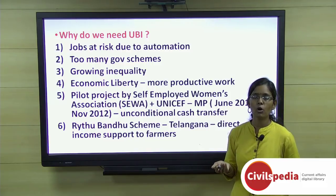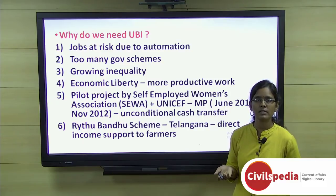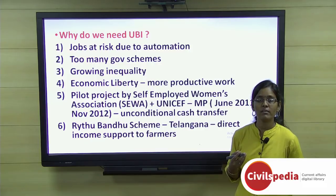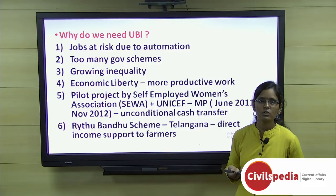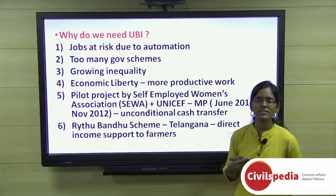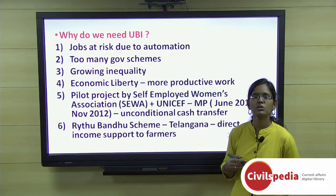The second argument for UBI is that India has around 950 centrally sponsored and central sector schemes, plus numerous state government schemes, yet citizens still lack a regular income safety net. UBI would give individuals confidence that they can sustain themselves at a basic level, encouraging them to pursue more creative and productive jobs rather than clinging to unproductive ones out of fear.